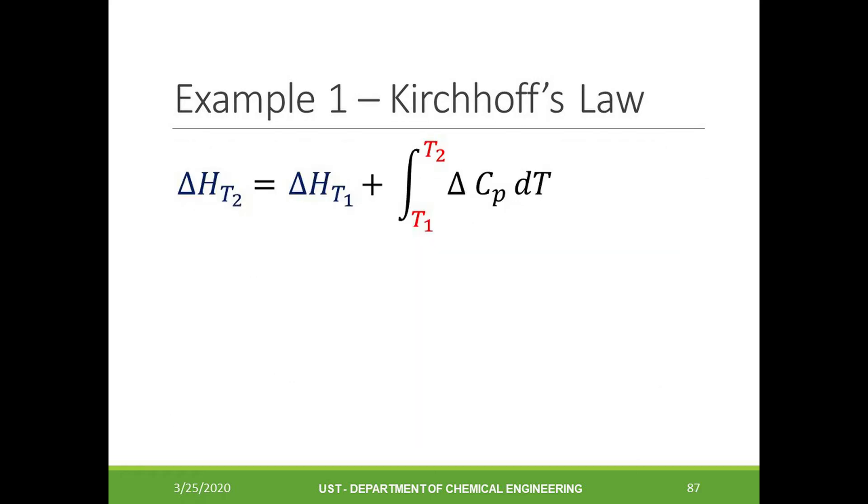Let us start by writing the Kirchhoff's equation. When the change in the heat capacity at constant pressure is independent of the temperature in the range T1 and T2, the integral part becomes delta CPM times T2 minus T1, and the equation becomes like this. This equation can only be applied to small temperature changes, because over a large temperature change, the heat capacity is no longer constant.